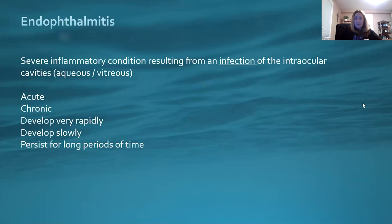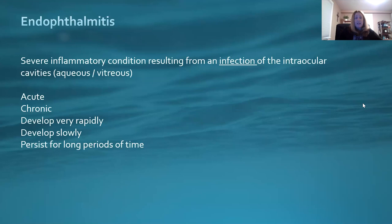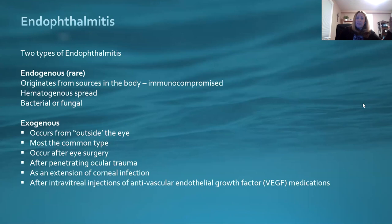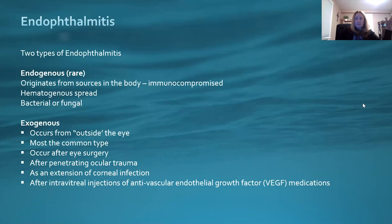Now we get into endophthalmitis — a severe inflammatory condition resulting from an infection of the intraocular cavities: your aqueous and vitreous. It can be acute or chronic, develop rapidly or slowly. There are two types: endogenous, which is rare and can happen with immunocompromised individuals through hematogenous spread of bacteria or fungus; and the more common exogenous type, which occurs from contamination from something that entered the eye — after surgery, penetrating ocular trauma, extension of a corneal infection, or after intravitreal VEGF injections.